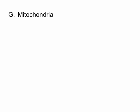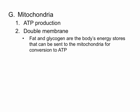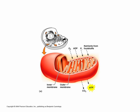Mitochondria are another organelle found inside the cell. This is where ATP production takes place. Cells that require a lot of energy, such as muscle cells, may have lots of mitochondria. The structure of a mitochondria is a double membrane. Fat and glycogen are the body's energy stores sent to the mitochondria for conversion to ATP. Glycogen is the body's sugar storage and is always used prior to fat — you use up sugar before you start burning fat.